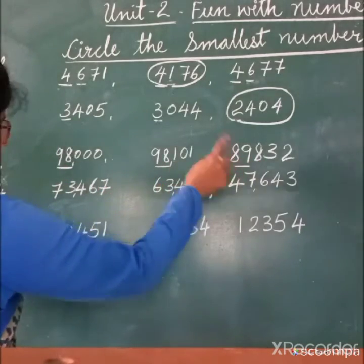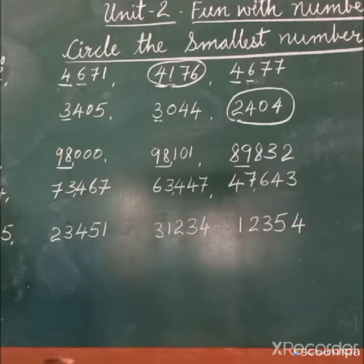Which is smallest? 98, 98, 98, 89. So we can make out this is the smallest number and we have to circle here 71283.